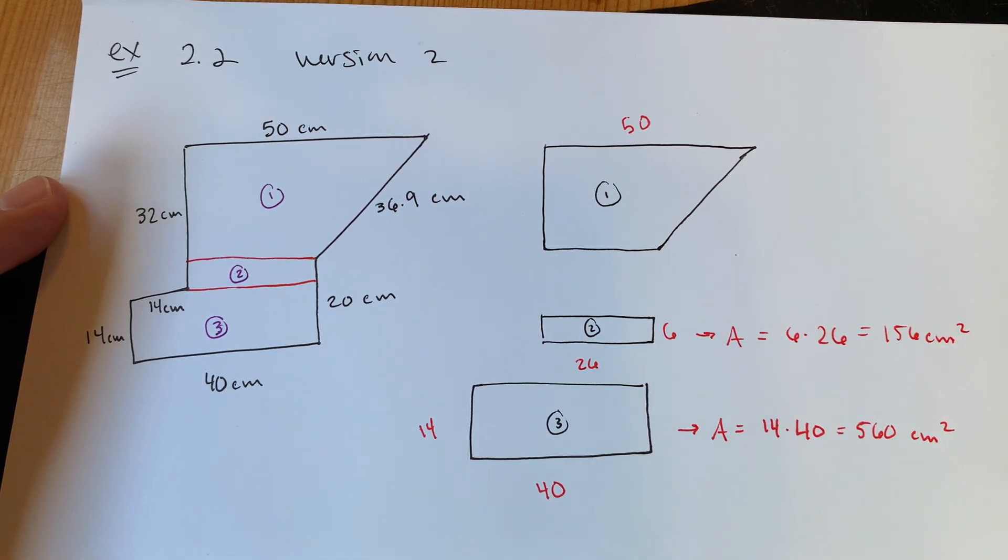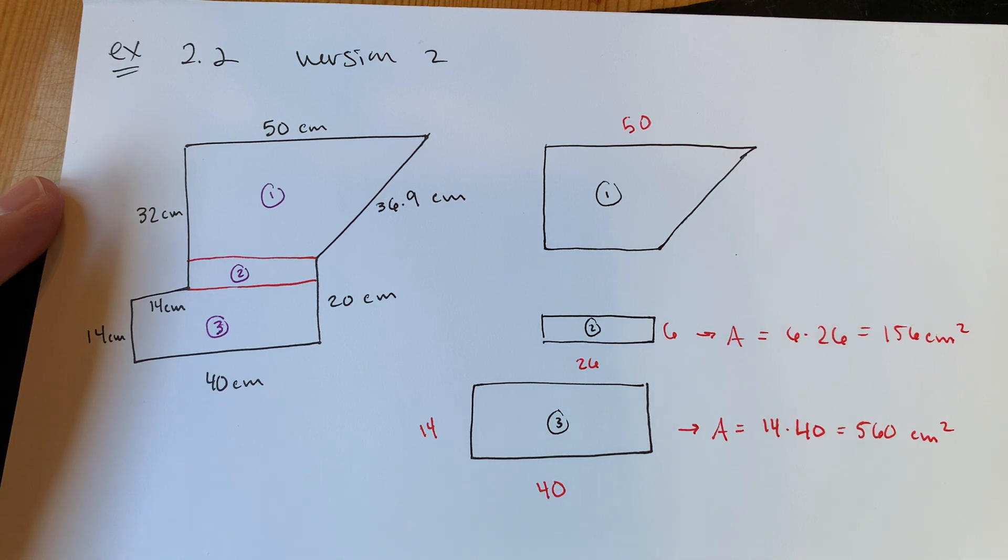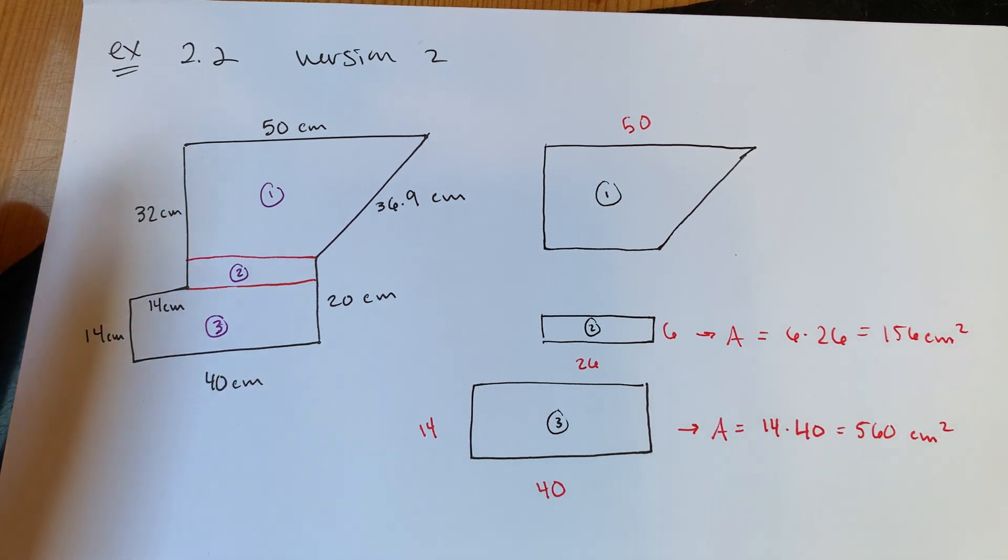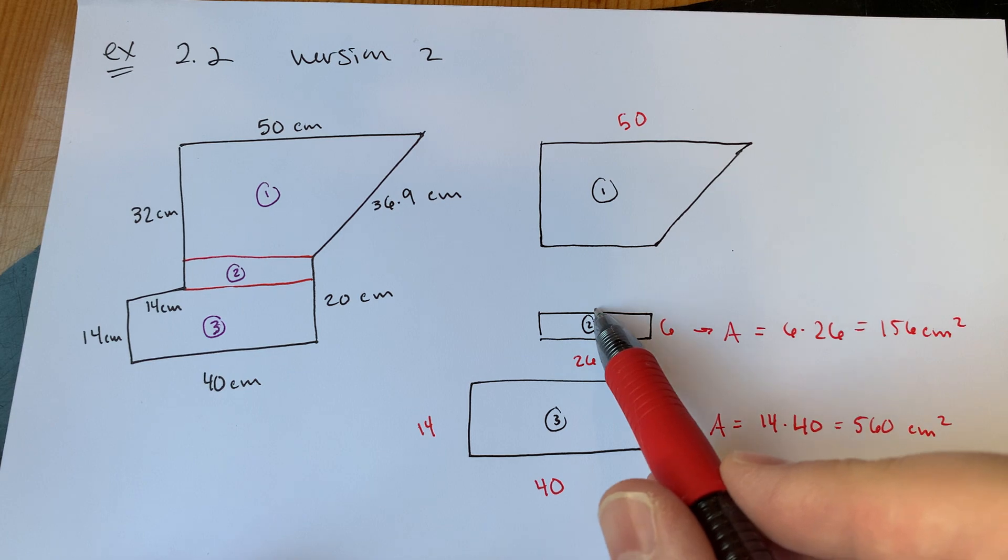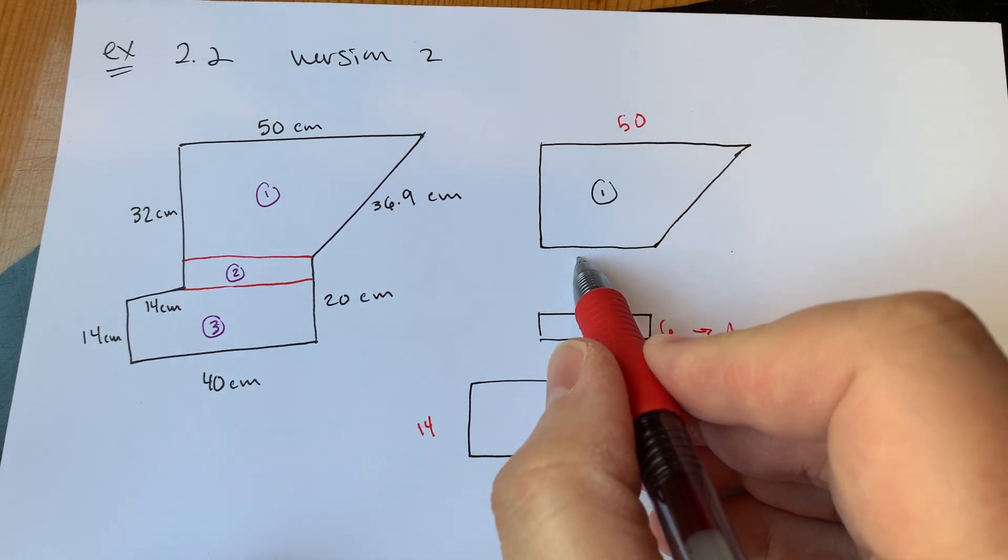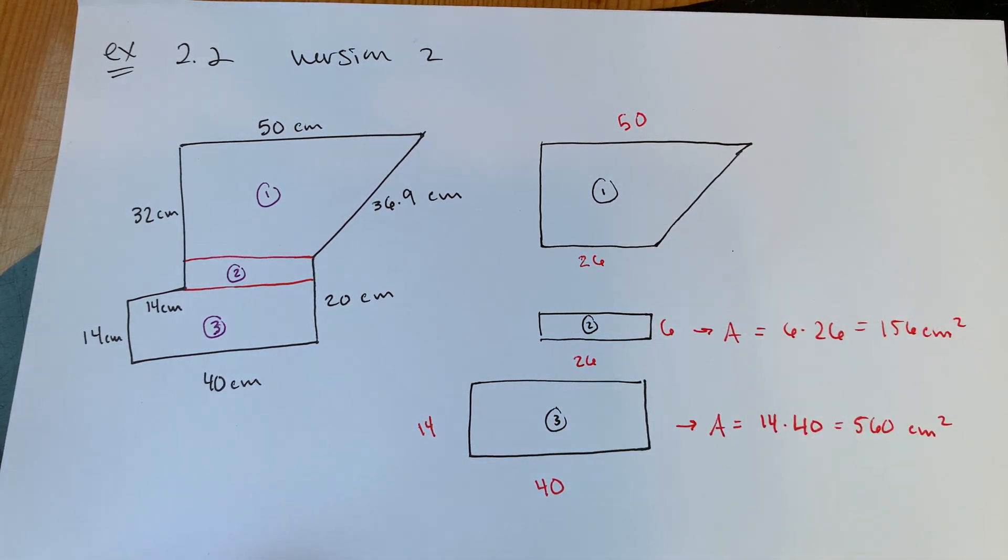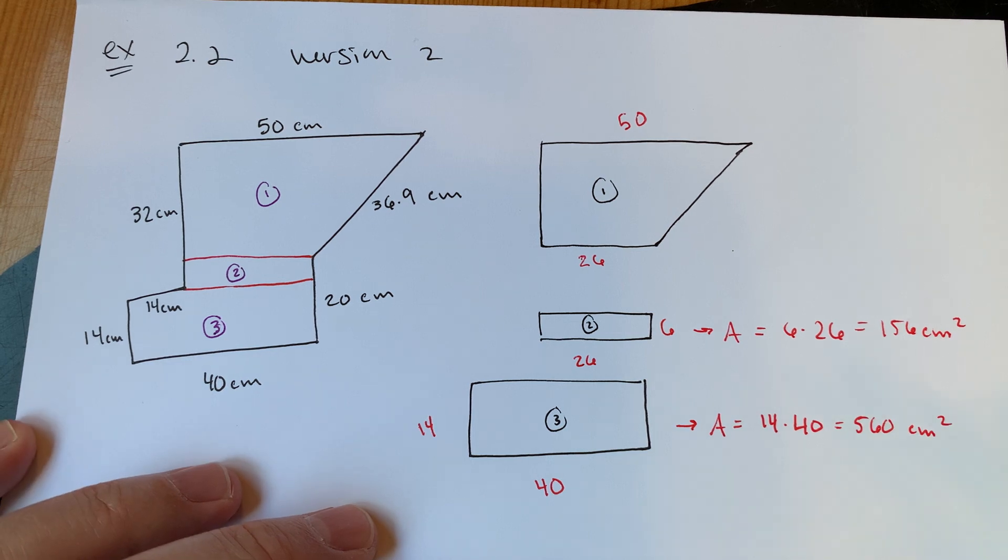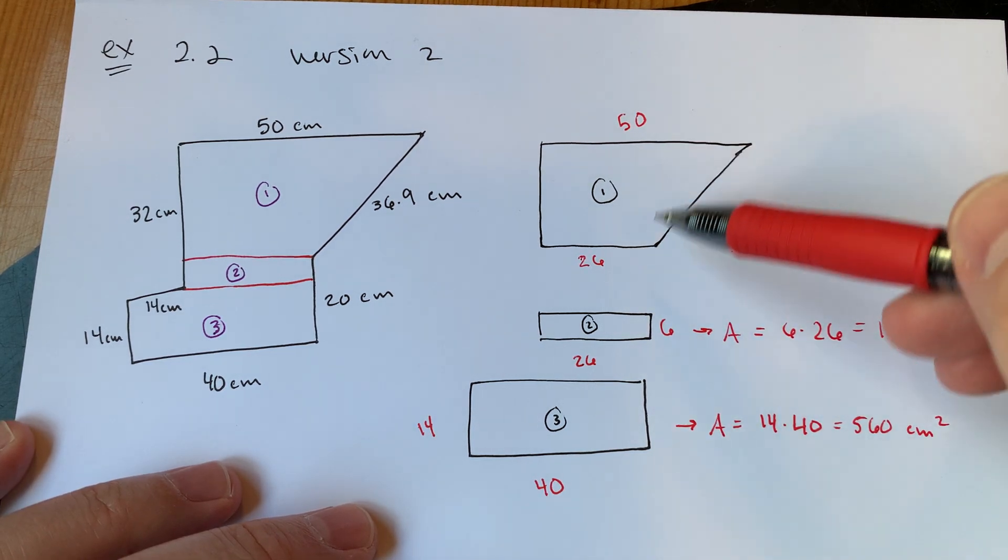Going across, we actually have this value from the last version, but if we were starting from scratch, if I know the full distance here is 40 but 14 of them are here, that would be 40 minus 14, which would be 26 here. So that area would be 6 times 26. Quick calculation, that's 156 square centimeters. So then I can reuse some of this information. If this is 26, then this is 26, then this is 26.